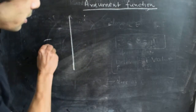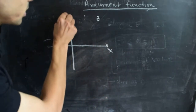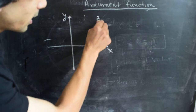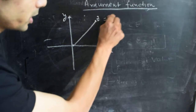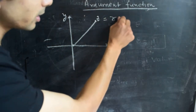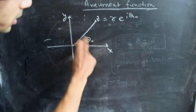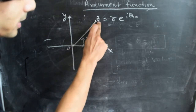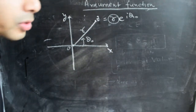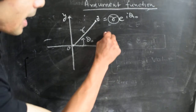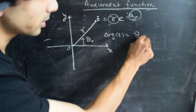Consider the z-plane with the real axis labeled x and the imaginary axis labeled y, and some point z in the complex plane. If we depict point z using polar notation, it has a magnitude and a phase or argument theta, called theta-naught. Theta-naught is the angle that the vector from the origin to point z makes with the x-axis, and r is the magnitude. This is what we define as the argument of z.